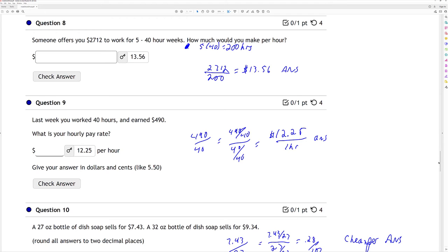Number 9. Last week you worked 40 hours and earned $490. How much is that an hour? So I divide it. I have $490 divided by 40. I divide my numerator and denominator by 40, I end up with $12.25 per hour.